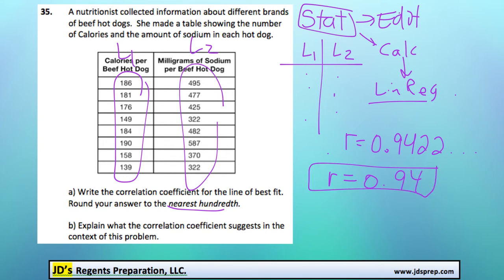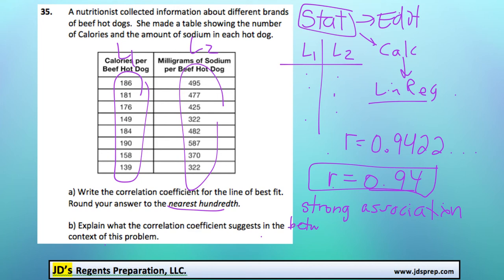For the second part of the question, it says to explain what the correlation coefficient suggests in the context of this problem. Since our correlation coefficient is so close to positive 1, that means there is a strong association between our two variables — in this case, the calories in a hot dog versus the milligrams of sodium. So we could say that there's a strong association between the calories and sodium in a hot dog.